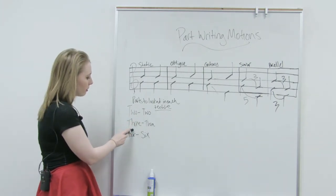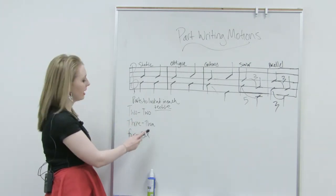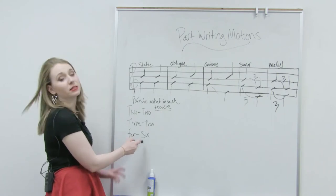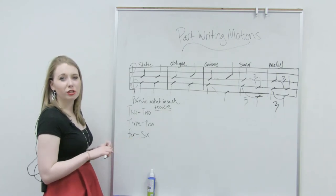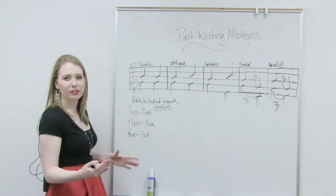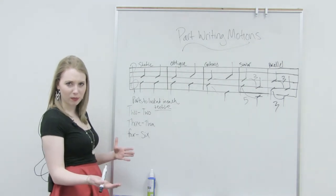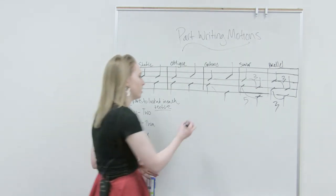In three-part textures we have three pairs to look at, and in four-part textures we have six pairs to look at. I'm going to show you how you have to look at six pairs in that four-part texture so you can see the relationship of each.